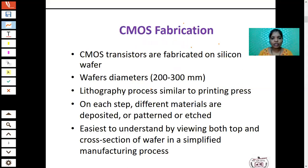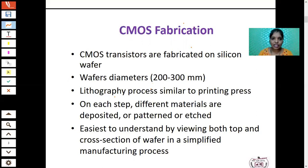So, CMOS fabrication. The CMOS transistor consists of two types of transistors: the NMOS transistor and PMOS transistor. Most transistors and ICs are fabricated using silicon material only. In the VLSI industry, 95% of ICs are manufactured using silicon. The CMOS transistors are fabricated on the silicon wafer, which has a diameter of 200 to 300 mm. We perform many steps to fabricate an IC — that is called the lithography process. Lithography is the sequence of steps followed to fabricate an IC.